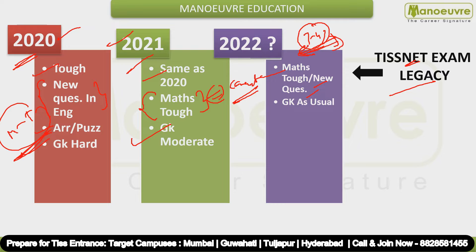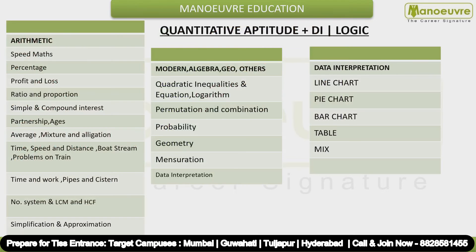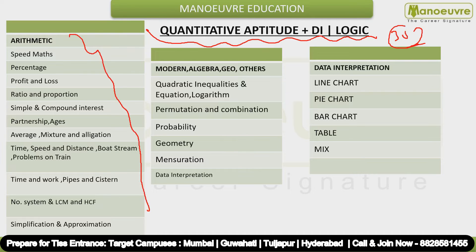So if you want to crack the TISS-NET exam but have a problem with certain sections, you have to work hard. Now let's talk section by section. The Quant, DI, and Logic section has 30 questions. The breakup is: Arithmetic 8–10 questions, Logic area 3–4 questions, Maths and DI 26 questions total with approximately 6 DI questions.